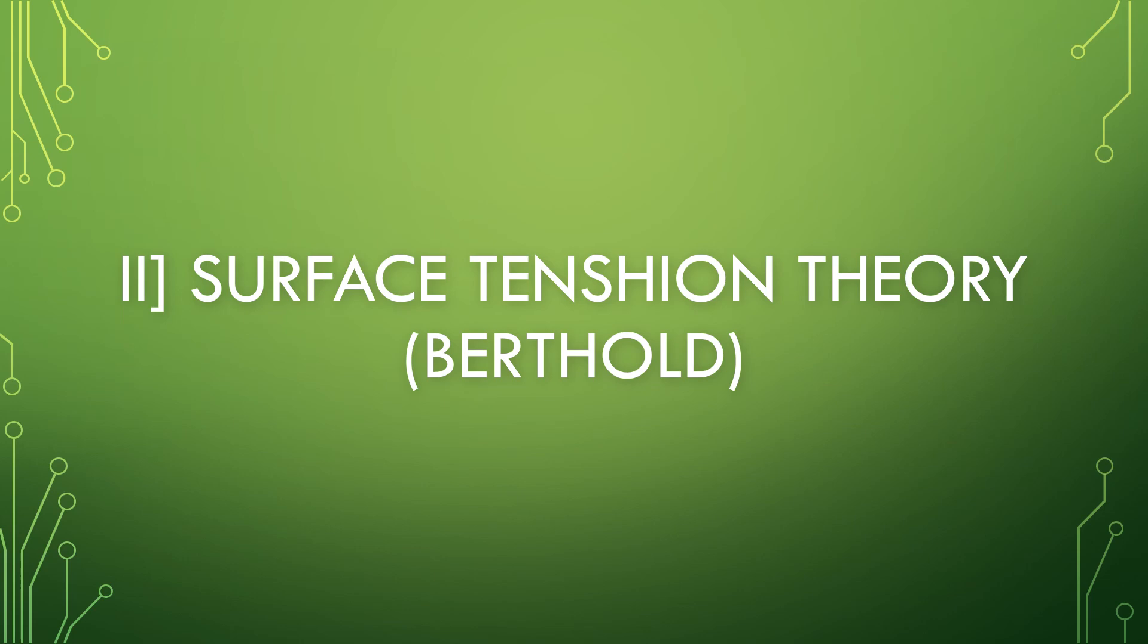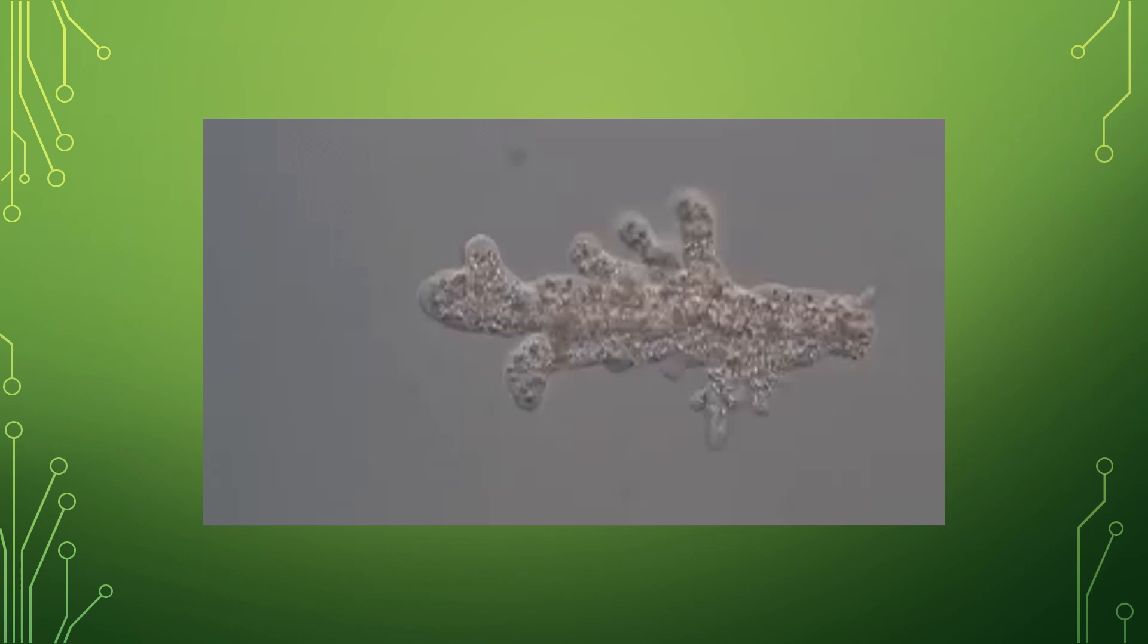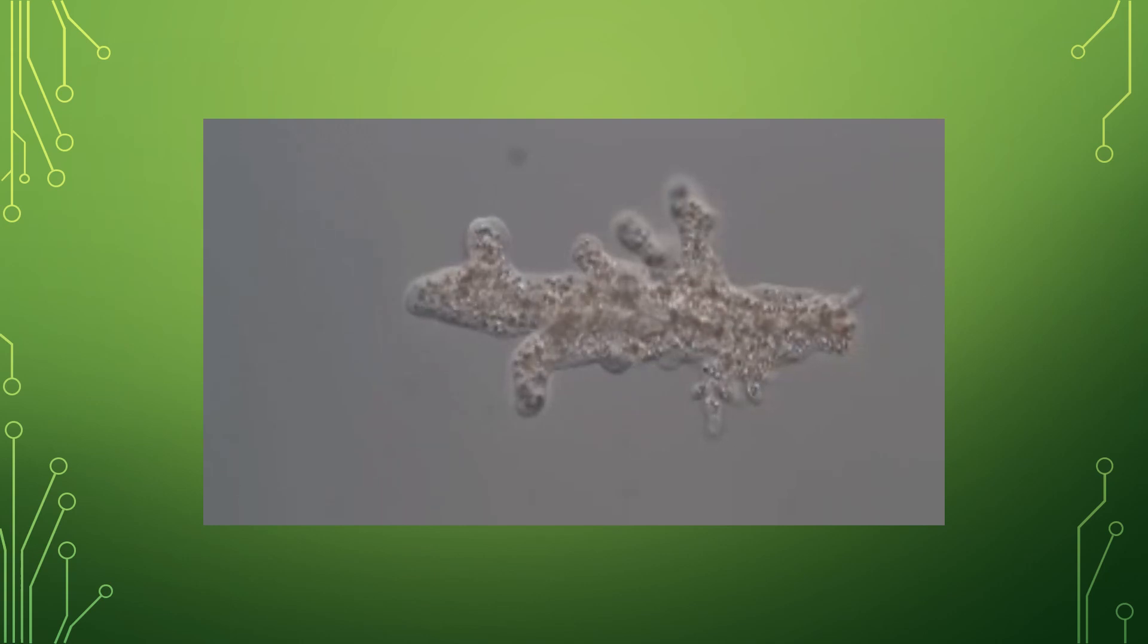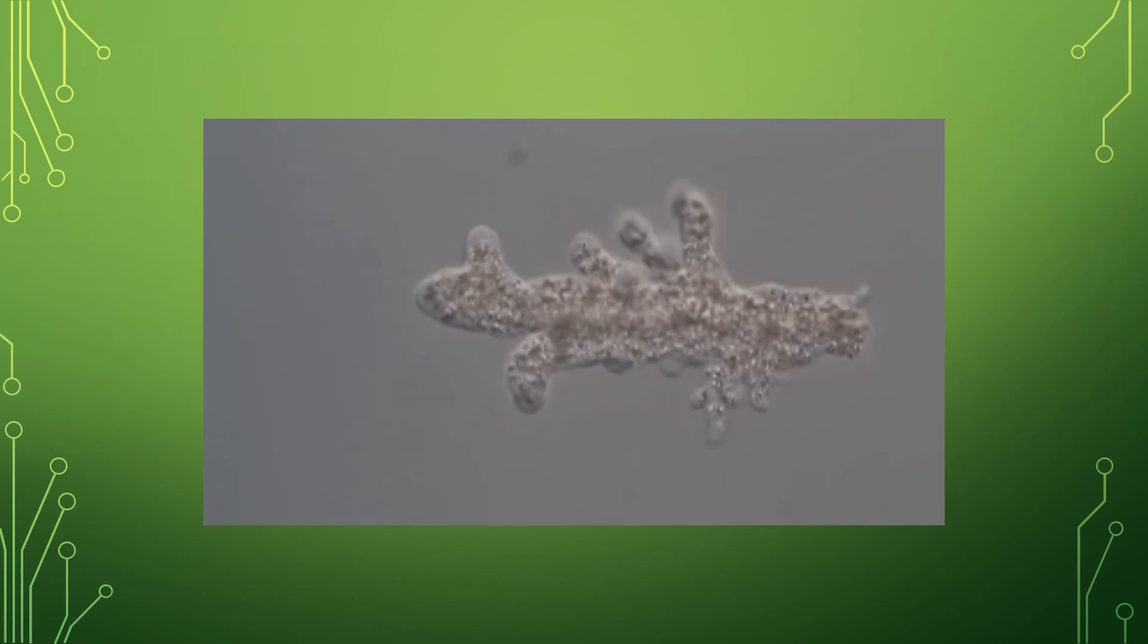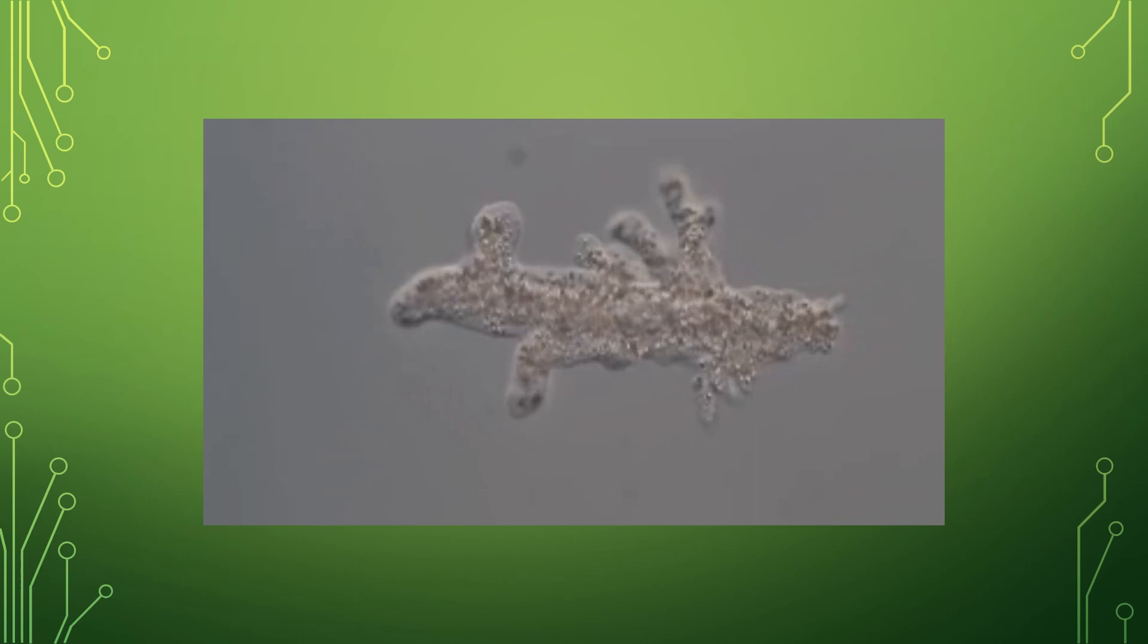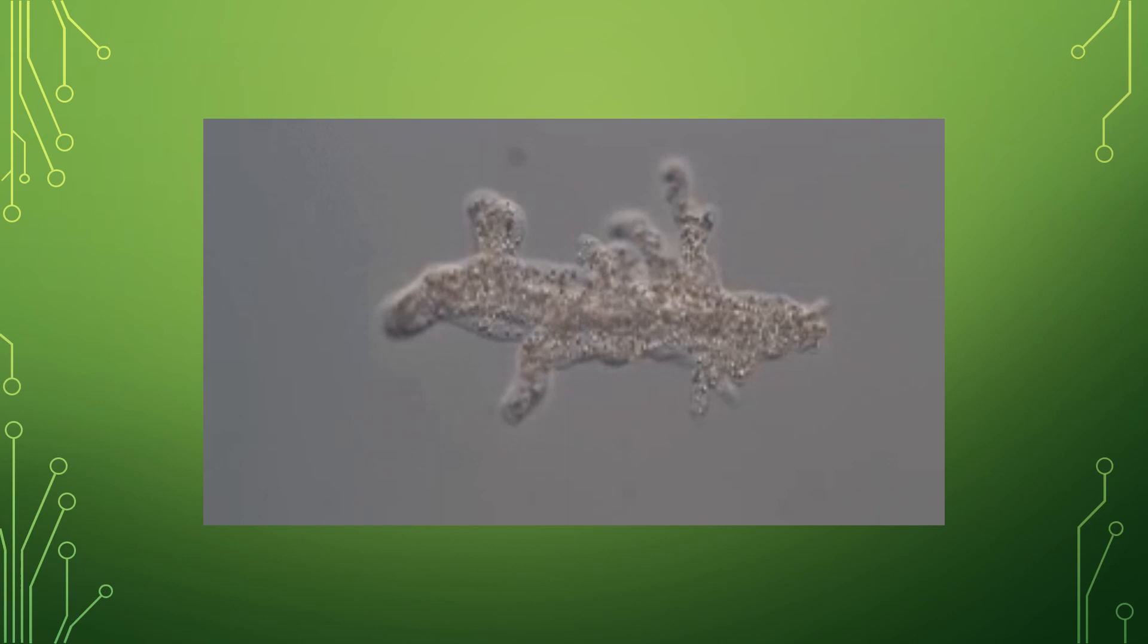Second theory is Surface Tension Theory, proposed by Berthold. This theory says that the pseudopodium is formed from the surface of the body by a change in surface tension. Now let us discuss this theory step by step. First step: Protoplasm is a fluid, it remains spherical due to surface tension. Second step: The surface tension may be decreased at any point on the surface due to external changes. Third step: At the point of low surface tension, the protoplasm flows out in the form of pseudopodium. Fourth and last step: The amoeba now moves in the direction of pseudopodium.